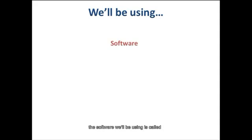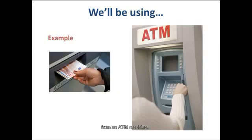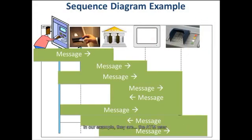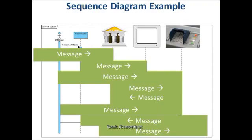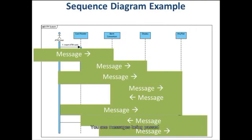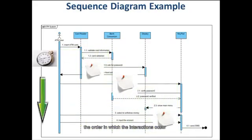In the demo, the software we'll be using is called Visual Paradigm for UML, Modeler Edition. We'll walk through an example of withdrawing money from an ATM machine and see how the interactions between objects look like in a sequence diagram. At the top of a sequence diagram, you'll see the objects or roles of the system lined up in a row, and the order in which the interactions occur as time moves from top to bottom in the diagram.